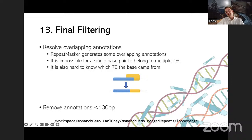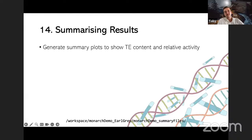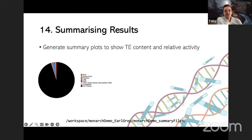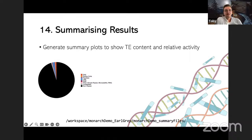That is the whole Earl Grey pipeline from start to finish. If you go to the summary files directory in Gitpod, you should see two PDFs and some other files. The first thing you should see is a pie chart showing the proportion of the genome assembly annotated as TEs from the main superfamily classifications — a high-level overview of how much of your genome is which TE superfamily. In this example we have a very low TE content because we're looking at a single chromosome of a species known to have a low TE content.